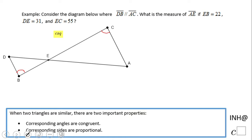Whenever you have two parallel lines, the alternate interior angles are congruent. The same thing about these two — they are congruent by the same property: alternate interior angles on a different transversal. You could also say these angles are congruent because they are vertical angles, but we only need two pairs.